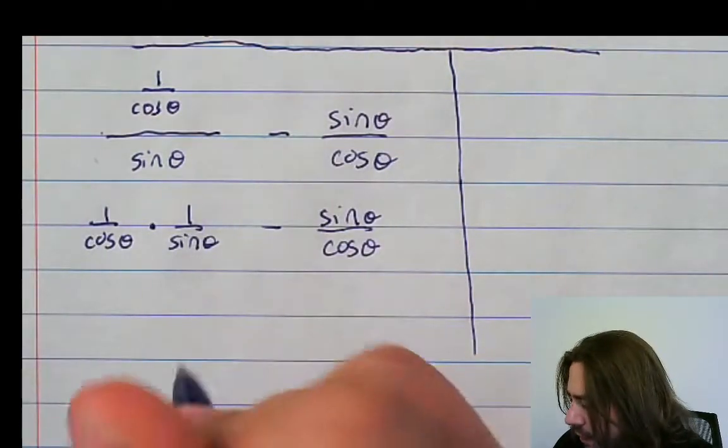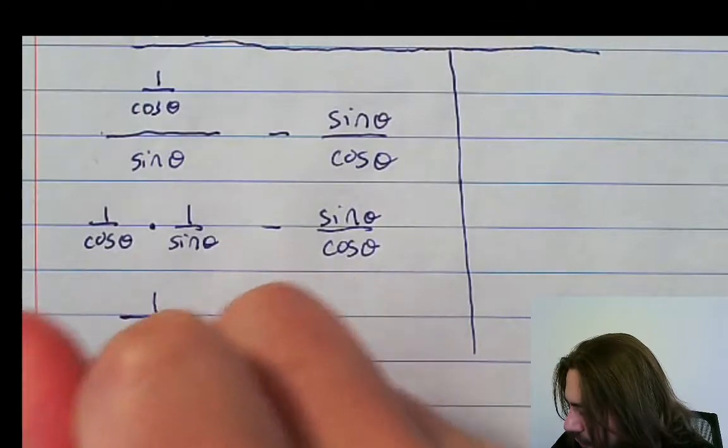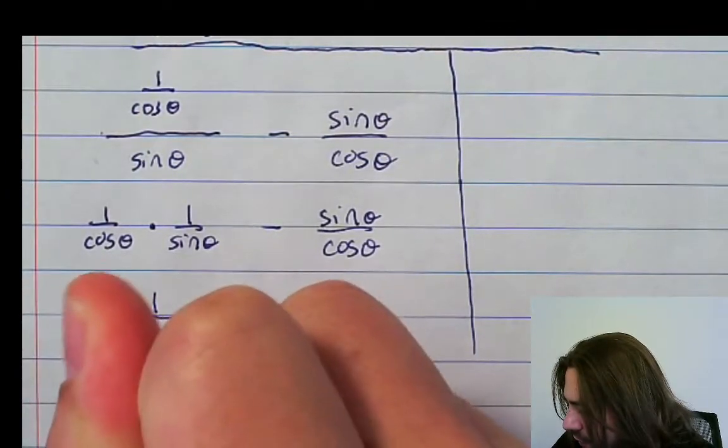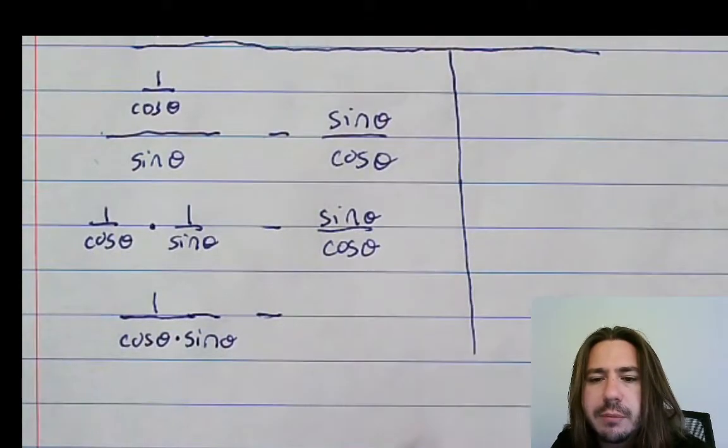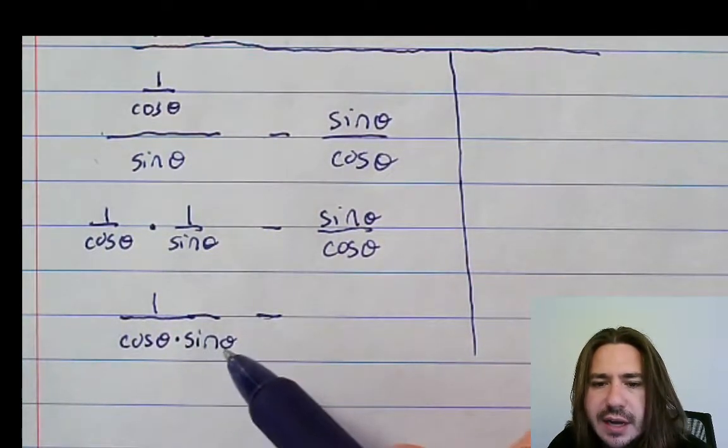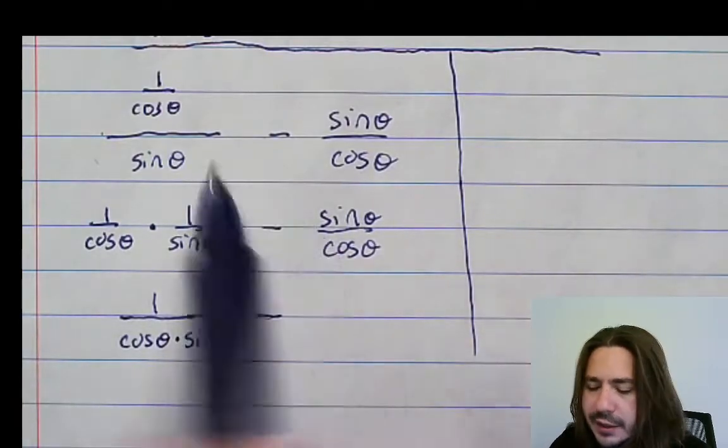So I'm going to multiply these together. That gives me 1 over cosine theta times sine theta. And then this would be my next fraction. But if I'm looking ahead, I say, okay, well, I actually need a sine in that denominator, too, to be able to combine these.